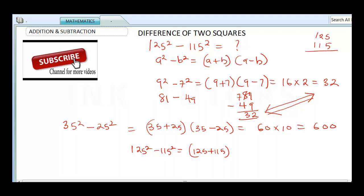all in brackets, times 125 minus 115. This is going to give us, 125 plus 115 is going to give us 240 when you sum it up.